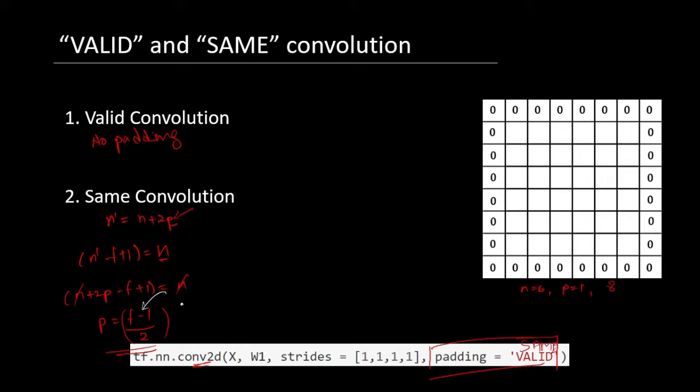Also one more thing here. Here f is usually taken as an odd number, because if we take f as even number, then we will need to apply uneven or asymmetric padding. For example, here we might need 1 pixel padding, and on this side you might need 2 pixel padding.